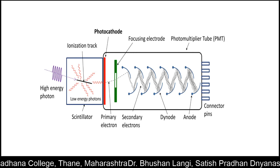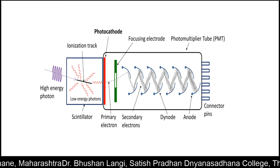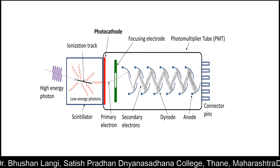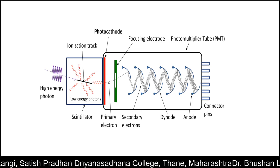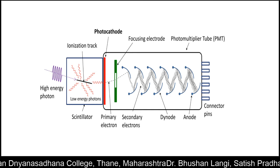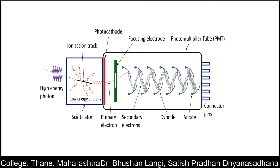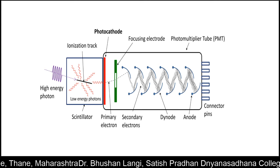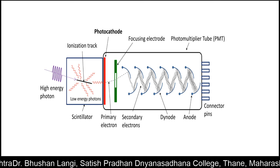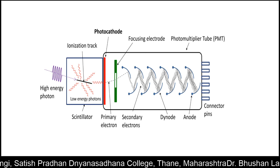During this path of electrons, there is a transition of electrons. Due to this transition of electrons, an electric current is produced. This produced electric current is found to be proportional to the amount of radiation incident on the scintillation counter. Thank you.